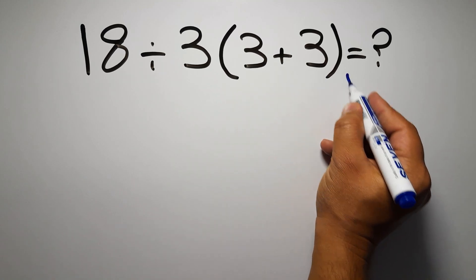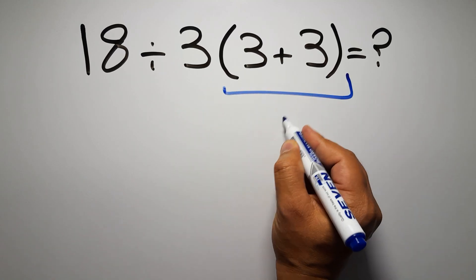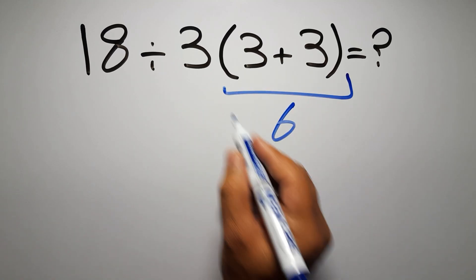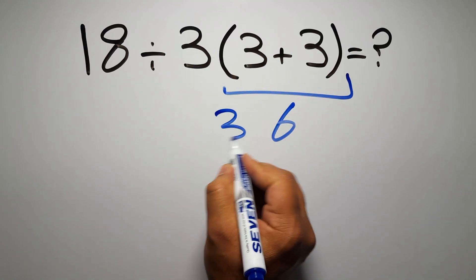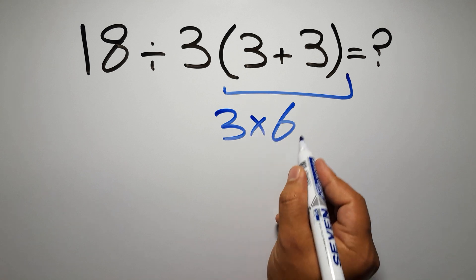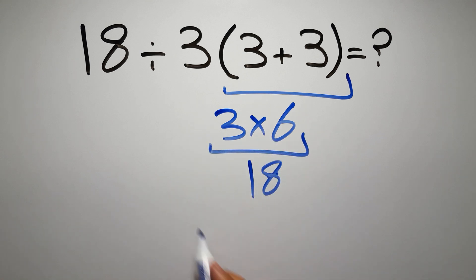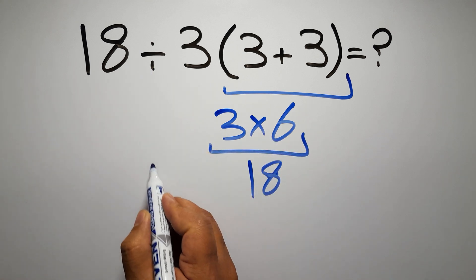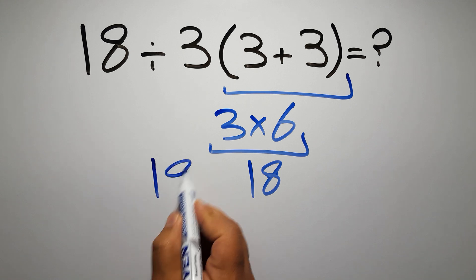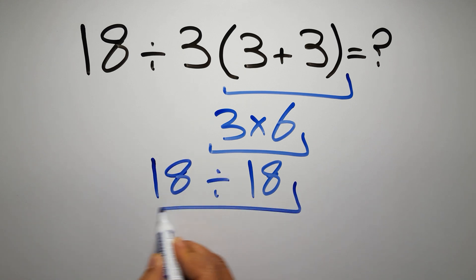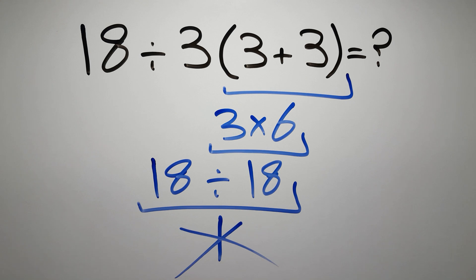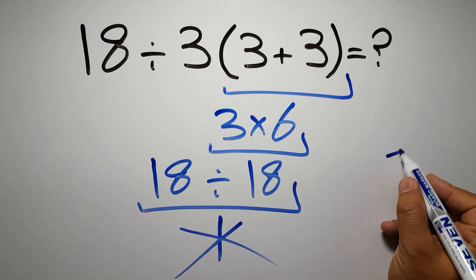3 plus 3 gives us 6, and 3 times 6 equals 18, so 18 divided by 18 is just 1. But this answer is not correct, because according to the order of operations, first we have to follow PEMDAS.